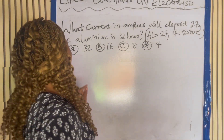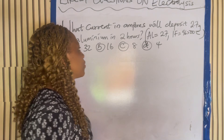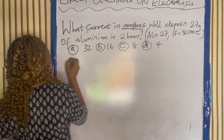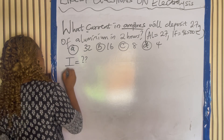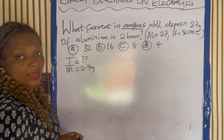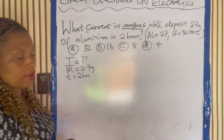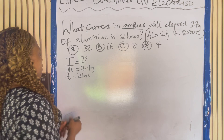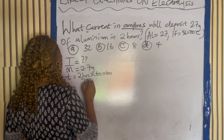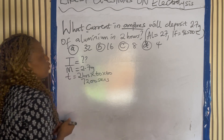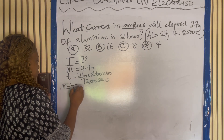What current in amperes will deposit 2.7 grams of aluminium in 2 hours? We're looking for current, denoted I. Mass is 2.7 grams. Time is 2 hours, which we convert to seconds by multiplying by 60 times 60, giving 7,200 seconds. The molar mass of aluminium is 27.